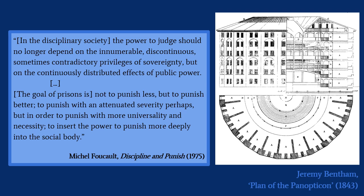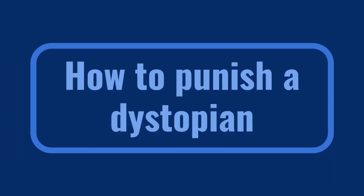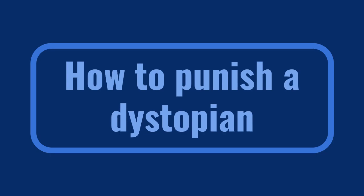We're going to test this idea out now. We're going to look back at We and see the methods of punishment used in One State and how they track onto Foucault's thinking. We're going to see how to punish a dystopian. This is a description that D-503 gives of one of his days in One State.